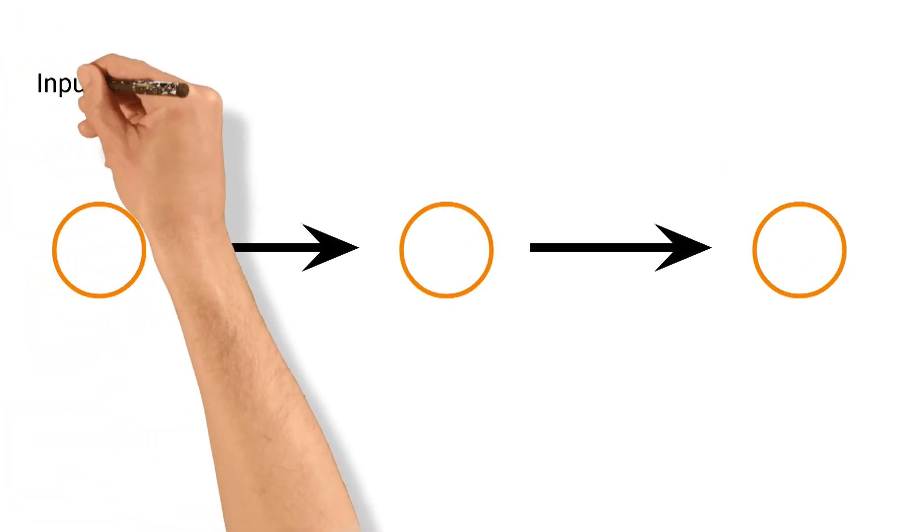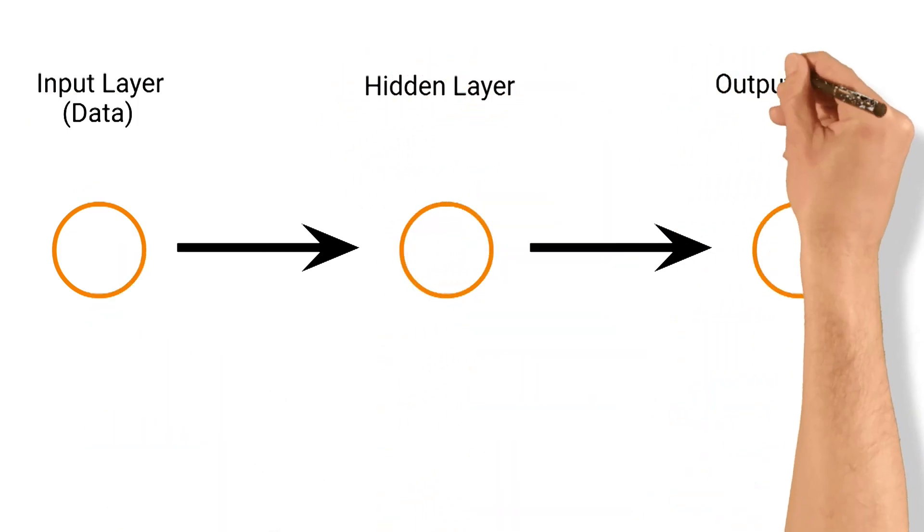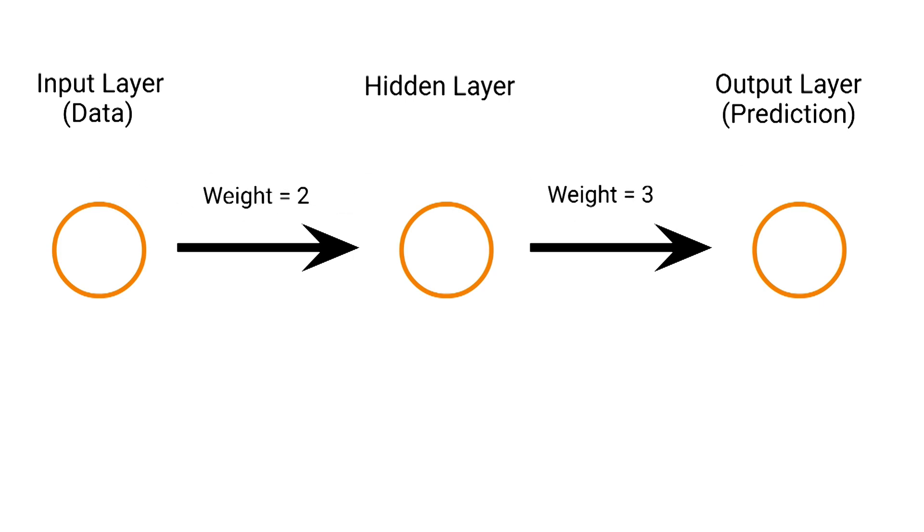We're going to draw what should be a very familiar drawing up on the screen here. We'll draw our neurons. Remember, the first layer is our input layer, or our data. The middle layer is our hidden layer. And the last layer is our output layer, or prediction. Now, you'll remember those arrows are called tensors, and they contain our weights and our bias, which we are going to default to some random values here, say 2 and 1, and then 3 and 1 in the second tensor.